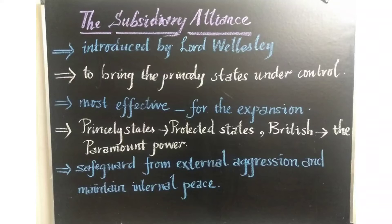Why did the Indian rulers want protection from the British? The Indian rulers were amazed by the British army because they used guns and advanced weapons. At that time, we had only artillery, cavalry, and elephantry. We didn't have so many weapons like the British. So the Indian rulers were worried. Lord Wellesley introduced the Subsidiary Alliance to bring all the princely states of India under the control of the British. All the princely states which joined under this system were known as protected states.